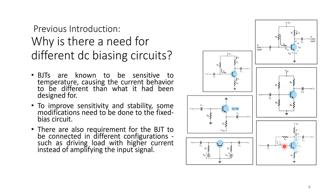We will look at configurations like the emitter follower and the common base. There was a question from a student in the last tutorial: if BJTs are so sensitive to temperature, can you use them as a temperature sensor? Yes, you can, but that is not the scope of this lecture. Here, we want to use the BJT as an amplifying device and would like the Q-point to be stabilized.